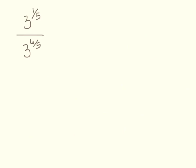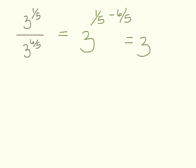Next: 3 to the 1/5 divided by 3 to the 6/5. Since the bases are the same, we subtract exponents: 1/5 minus 6/5 equals negative 5/5, which is negative 1. And 3 to the negative 1 is 1/3.